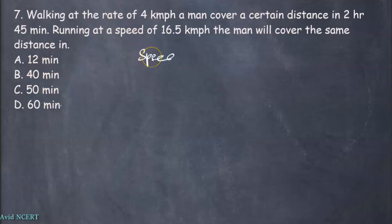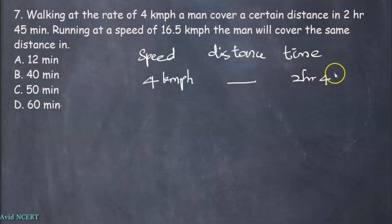So the data we know from this are speed, distance, and time. From the first sentence, walking at the rate of 4 kilometer per hour, which is speed 4 kilometer per hour, a man cover a certain distance in 2 hours 45 minutes. Running at a speed of 16.5 kilometer per hour, the man will cover the same distance, so this distance and this distance are same. They are asking for time.